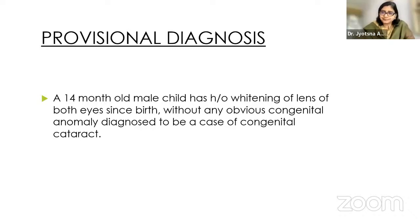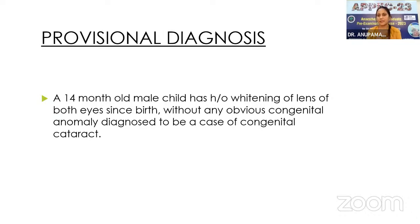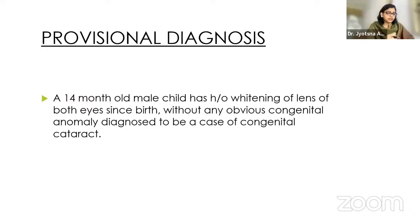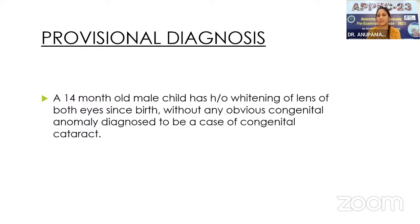Congenital anomalies or disorders associated with congenital cataract include Down syndrome, Pierre Robin syndrome, Lowe syndrome, Cri du Chat syndrome, Edwards syndrome, and Patau syndrome. Metabolic disorders such as G6PD deficiency can also be associated. TORCH infections during maternal pregnancy are another consideration, though in this case there is no history of TORCH infection in the mother.